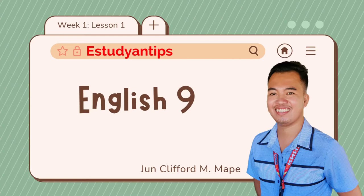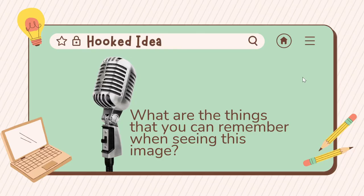For our beginning activity, the question is: what are the things that you can remember when seeing this image? For example, this one is a microphone — learners could share that this reminds them of a singer, or even their mom who used to scold them when they were kids. From this image we can connect to our objective, which is watching a world issue about the Russia-Ukraine war.